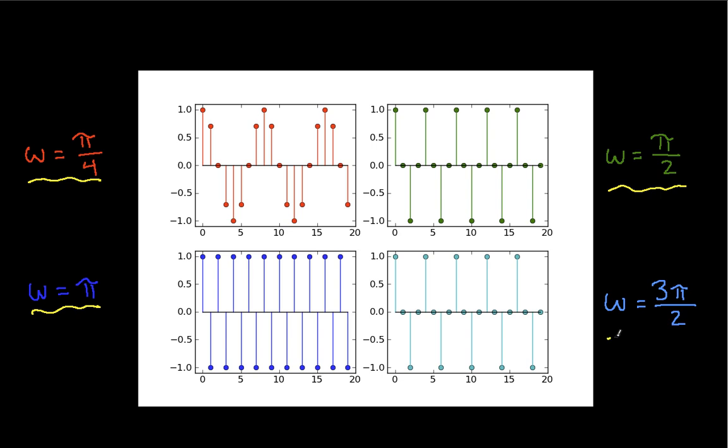But now here's the weird part. As I make omega equal to 3 pi over 2, you'll notice that this graph down here is exactly the same as this graph for omega pi over 2.